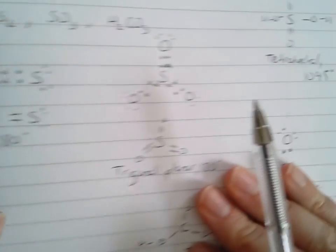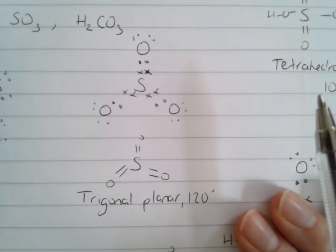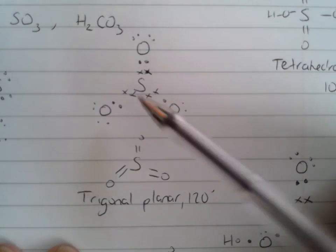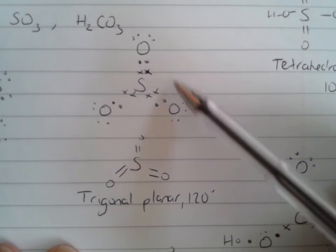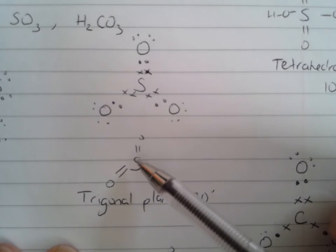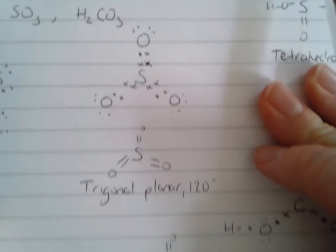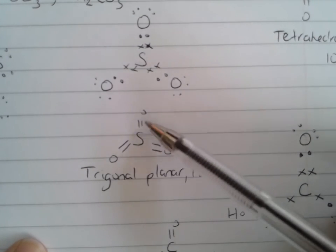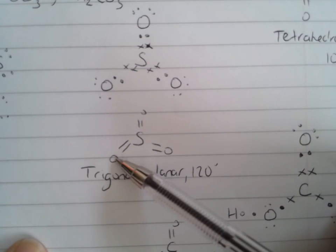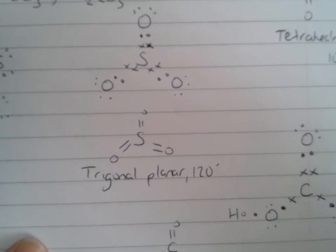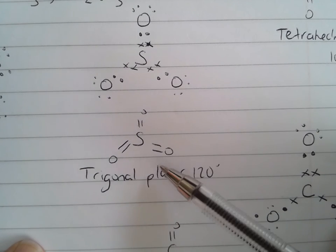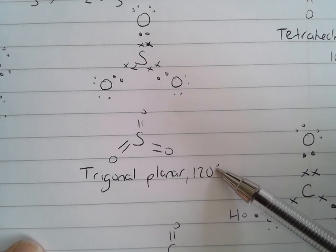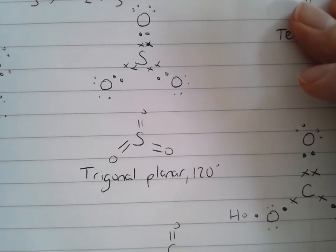The next one was SO₃. When you draw it out, you should see that sulfur is forming three double bonds with oxygens. When counting, yes, sulfur is forming six bonds, but you've only got three bonding regions — counting each double bond as a bonding region. Therefore, the shape is trigonal planar and the bond angle is 120 degrees.